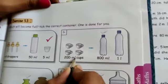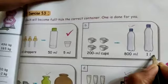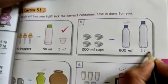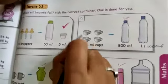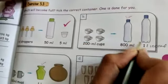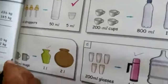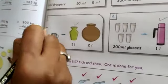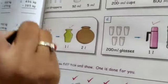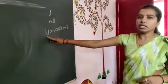Like that only, 200 ml cups are there. Here 800 ml one bottle, 1 liter one bottle. 1 liter equals 1000 ml, so this will become 800 ml. So on 800 ml bottle you have to tick. Here 500 ml mugs, 500 plus 500, 1000. 1000 means 1 liter. 1000 milliliters means 1 liter.